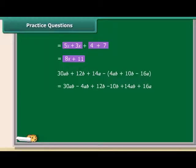Bring the like terms together, taking into consideration the sign of the terms. So, on rearranging, we get 26ab plus 2b plus 30a.